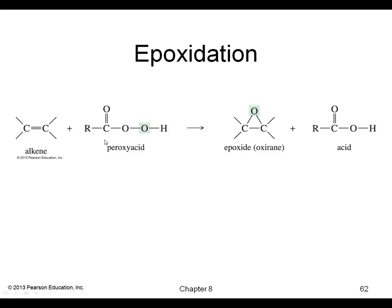Epoxidation reactions occur when we take an alkene and react it with a peroxy acid (structure: C=O, O–O–H). What happens is we get a three-membered ring with an oxygen forming across where the double bond was. These are called epoxides or oxiranes.